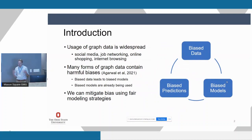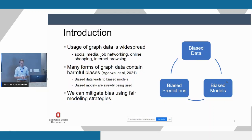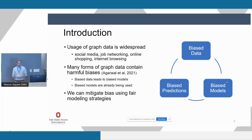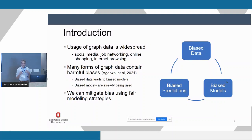Before we get into what we mean by emulated graph modification, let's look at some motivation for our work. Usage of graph data is widespread throughout all of modern society — social media, job networking, online shopping, internet browsing — every single one of these impacts us on a daily basis. Unfortunately, a lot of the graph data we have is biased, simply due to where it came from in our own society. Using this biased data in recommendation and prediction models leads to a feedback loop: biased data creates biased models, which create predictions, and when we act on those predictions, those new actions become the data for tomorrow. We really want to cut off the head of this and mitigate this bias.